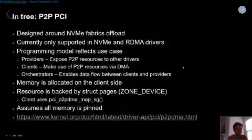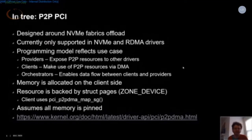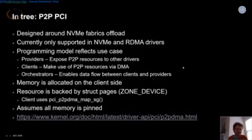Now that we have some upstream solutions, let me talk about two of them. The first is the peer-to-peer PCI DMA API. It was largely designed around NVMe fabrics offload, and the model is reflected in the API. It's very similar to the DMA API, where the client that wants to use the remote resource allocates the memory, it's pinned as long as needed, and then freed back to the subsystem when done.